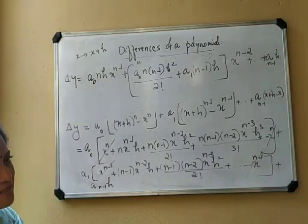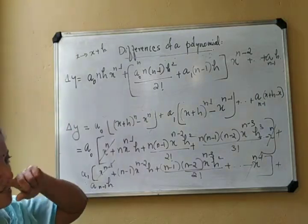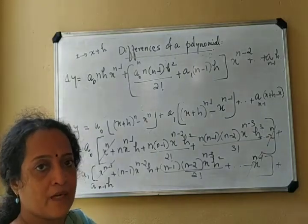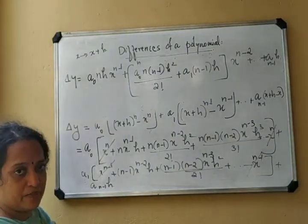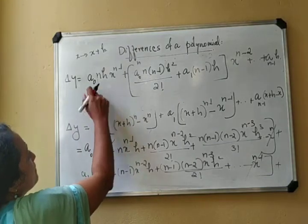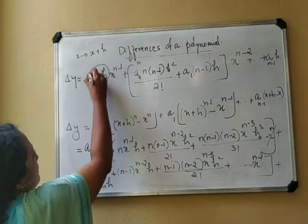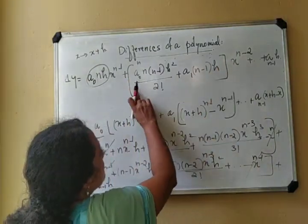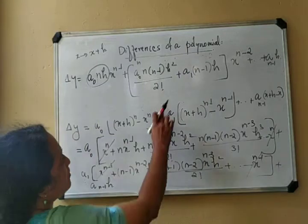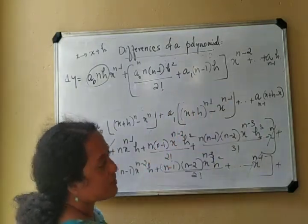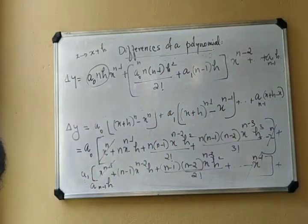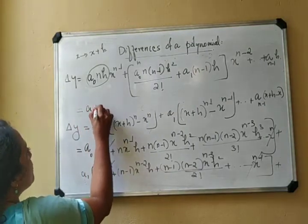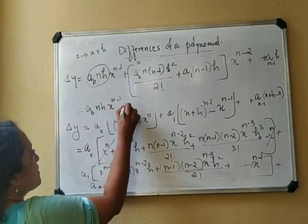Now we can see that all these coefficient values are constant if h is constant. That is, if x takes equidistant points, then h will be a constant. So a0·n·h is constant, and similarly the bracket term a0·n(n-1)·h²/2! + a1·(n-1)·h is also a constant, provided x is at equidistant points.